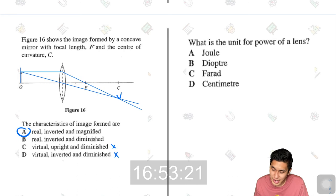What is the unit for power of a lens? It is diopter. Definitely. Answer D.